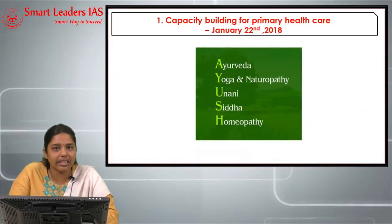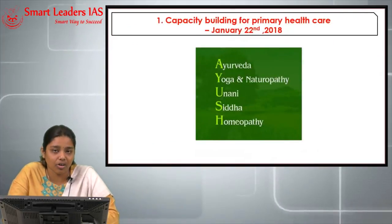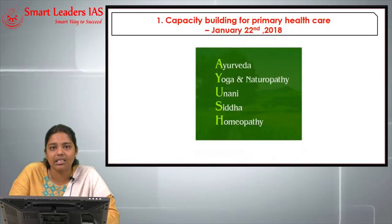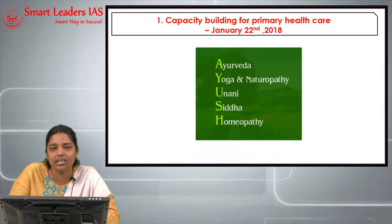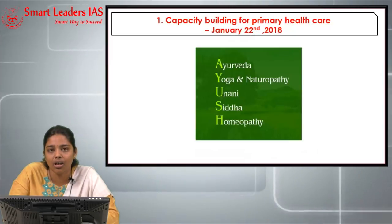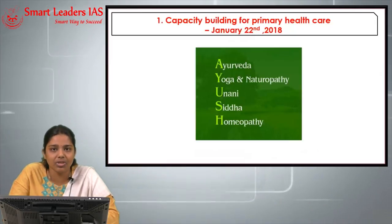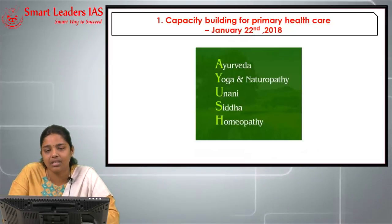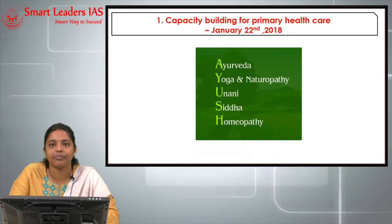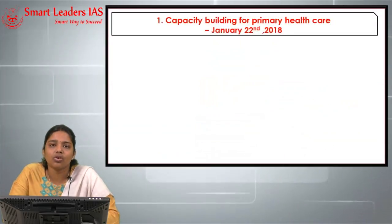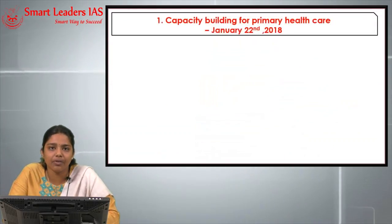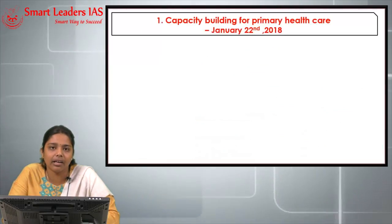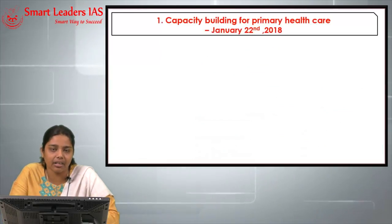Let us see what Ayush is first. In Ayush, A stands for Ayurveda, Y stands for Yoga, U stands for Yunani, S stands for Siddha, and H for Homeopathy. In India, we follow three types of public health care system in a hierarchy.